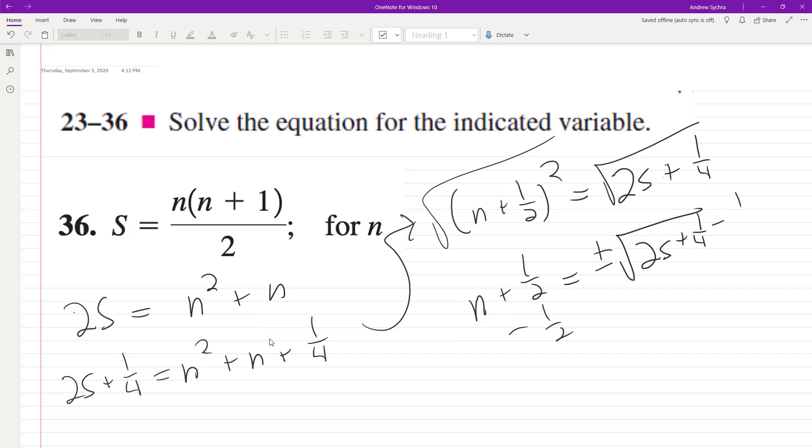Subtract 1/2 from both sides. n equals plus or minus the square root of 2s plus 1/4 minus 1/2.